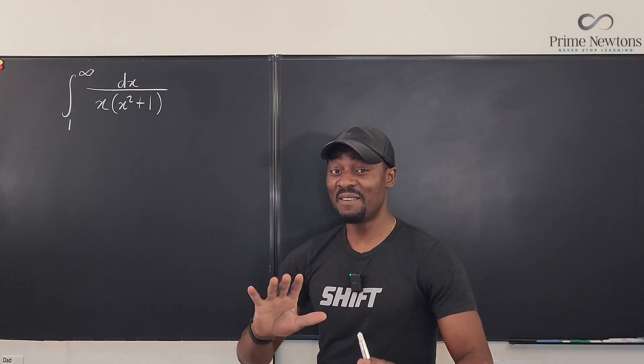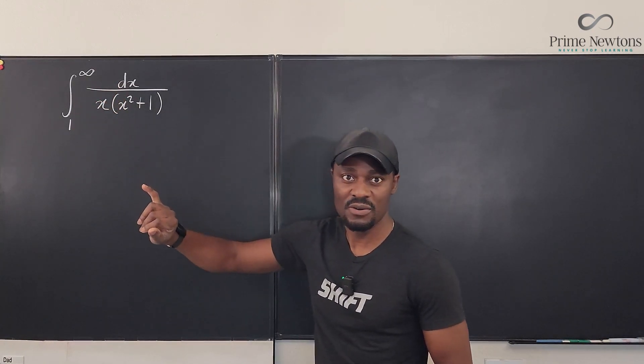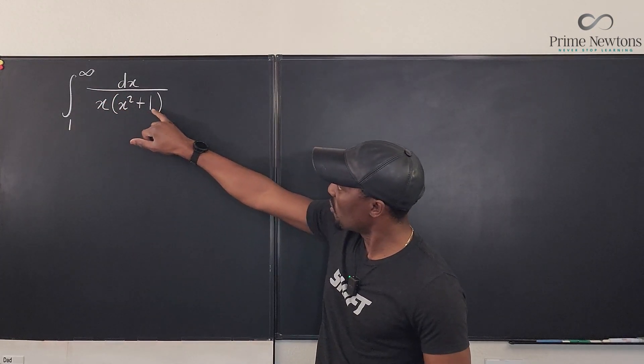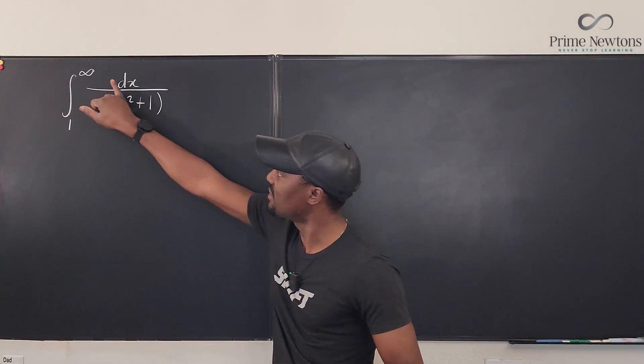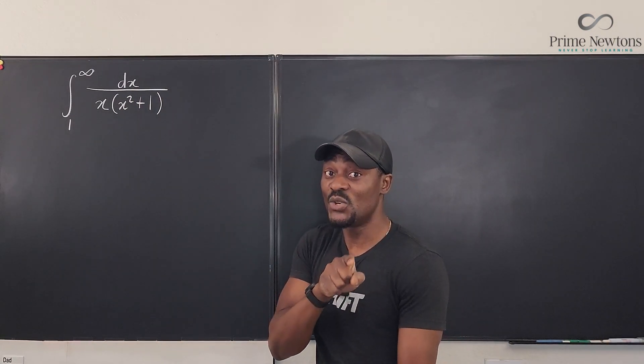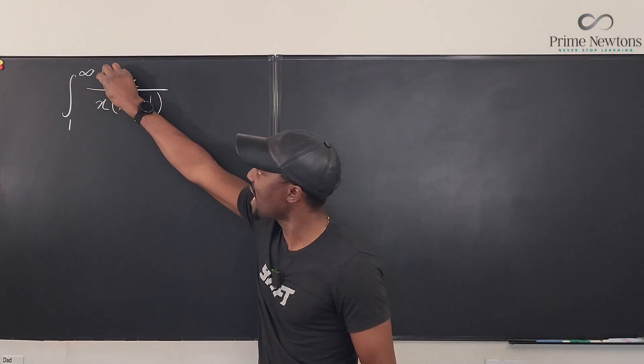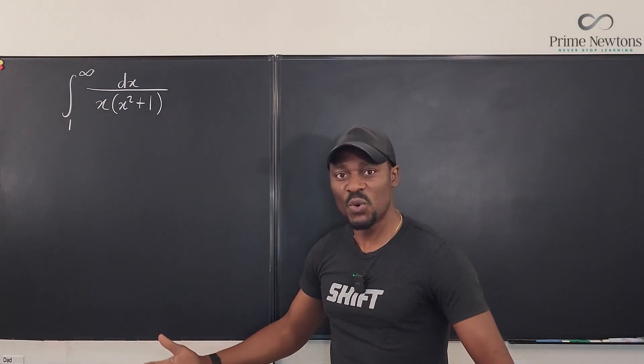This would have been a very easy integral if this x was sitting on top here, because we could make this whole expression our u, and then the derivative of u will be some x dx. But MIT knew what they were doing. They dragged the x down here, just to make life difficult for the ordinary man.